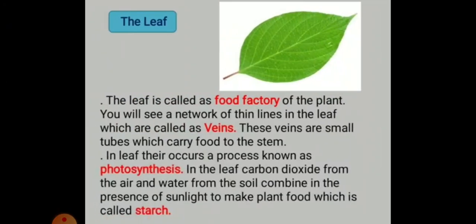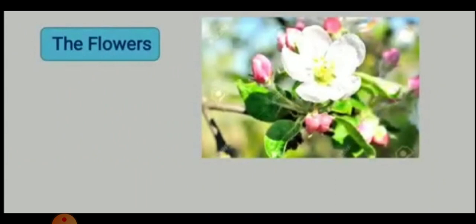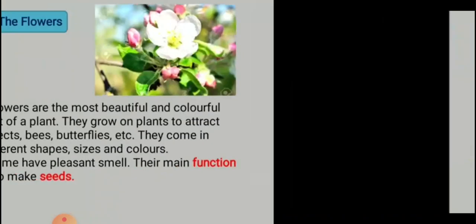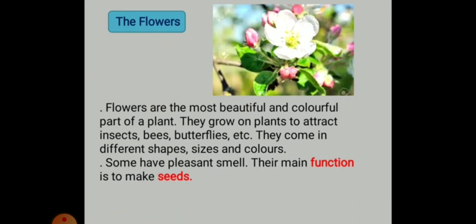Now, my dear students, you will find here the flowers, which are also parts of the plant. Flowers are the most beautiful and colorful part of the plant. They grow on plants to attract insects, bees, butterflies, and other insects. Flowers come in different shapes, sizes, and colors. Some have a pleasant smell. Their main function is to make seeds.